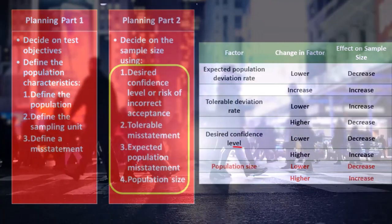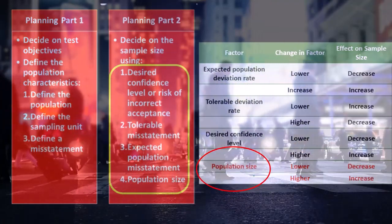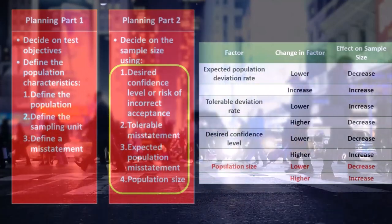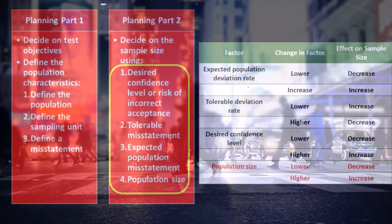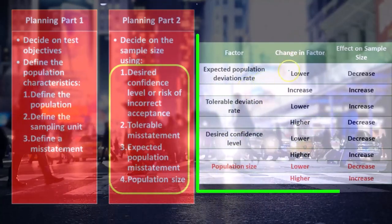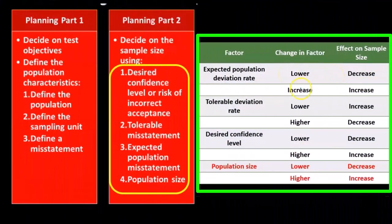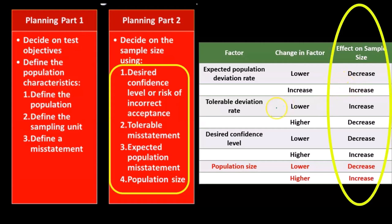Sample size has more of an effect on the sample as opposed to the control testing, so keep that in mind. The rest are going to be the same. Here we have the expected population deviation rate: if we lower it, the effect on the sample size is a decrease; if we increase it, we have an increase. The same type of thing is happening — lower means decrease, increase means increase.